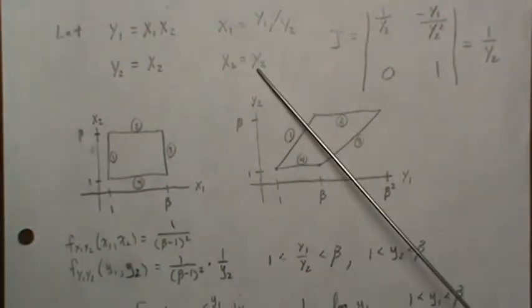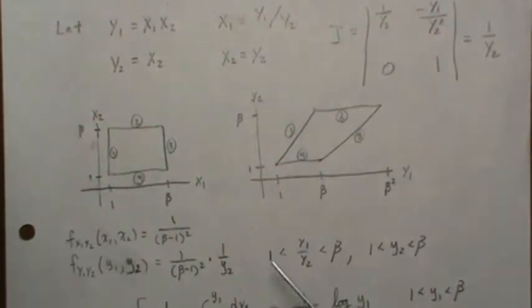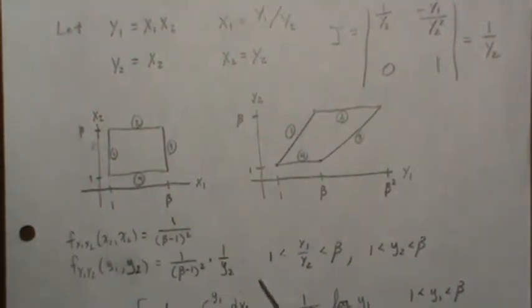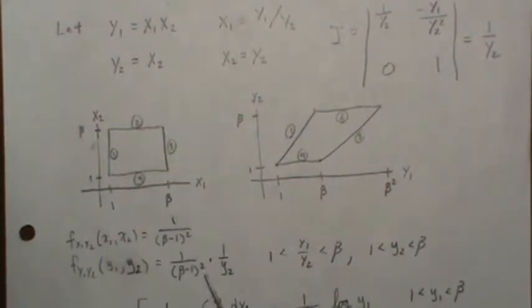Since y2 is x2 and x2 is always positive, there's no need for absolute values here. This ratio goes from 1 to beta, and y2 goes from 1 to beta. So here's the joint density.